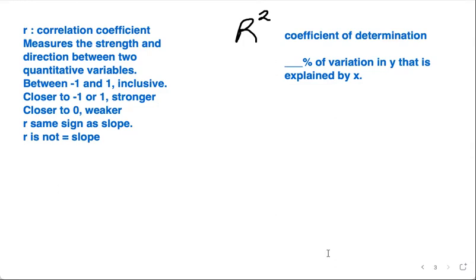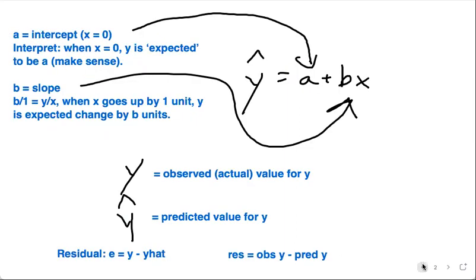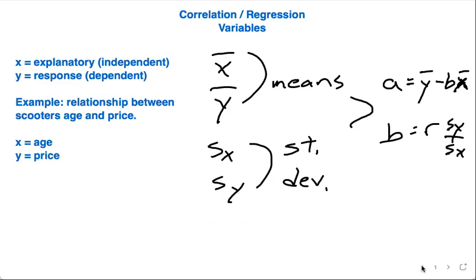So between r squared and r, dealing with the equation of the line and its interpretations, and all the other variables, this is the running list of variables you need to know for correlation and regression.